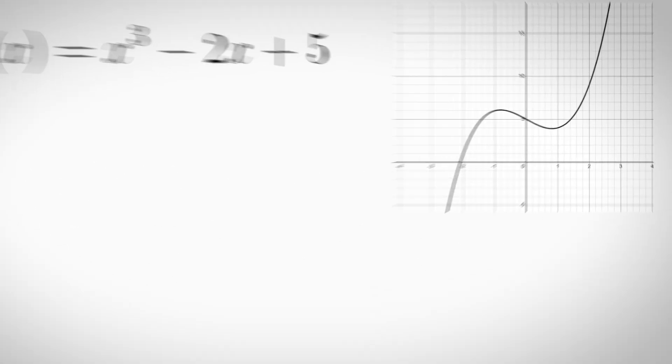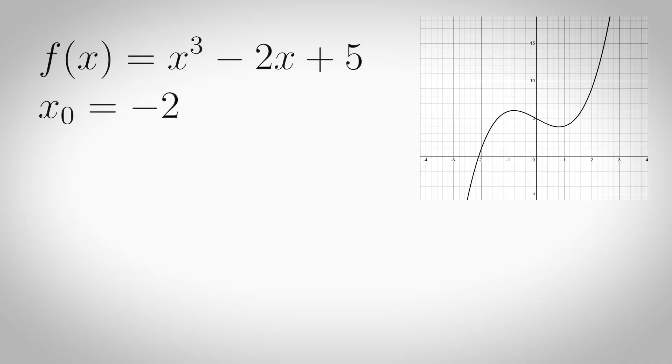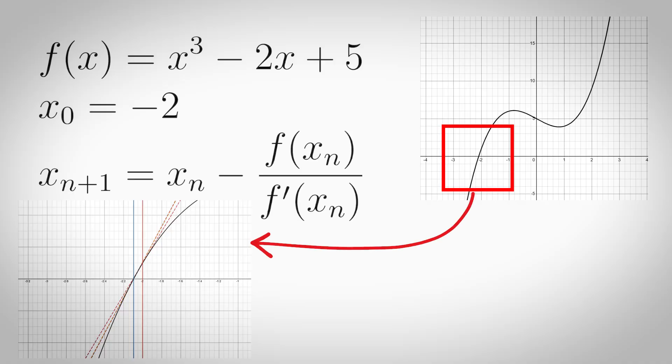Newton-Raphson Method. If we have a function f(x) and we want to find x when f(x) equals zero, then we start with a guess x_0 and we use this tangent line approximation to get closer and closer to the real value.